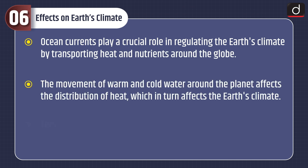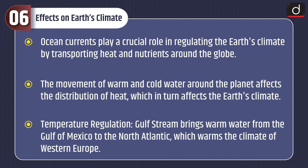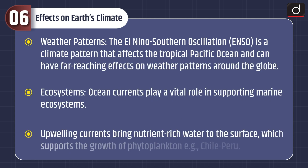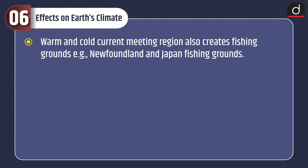Ocean currents play a crucial role in regulating the Earth's climate by transporting heat and nutrients around the globe. For temperature regulation, the Gulf Stream brings warm water from the Gulf of Mexico to the North Atlantic, warming the climate of Western Europe. Regarding weather patterns, the El Niño Southern Oscillation is a climate pattern that affects the tropical Pacific Ocean and has far-reaching effects globally. Ocean currents also support marine ecosystems — upwelling currents bring nutrient-rich water to the surface supporting phytoplankton growth, as seen in the Chile-Peru region. Meeting zones of warm and cold currents also create rich fishing grounds, such as those off Newfoundland and Japan.